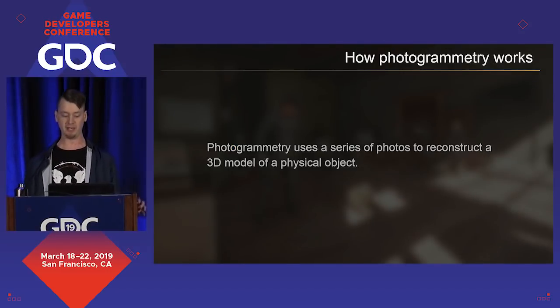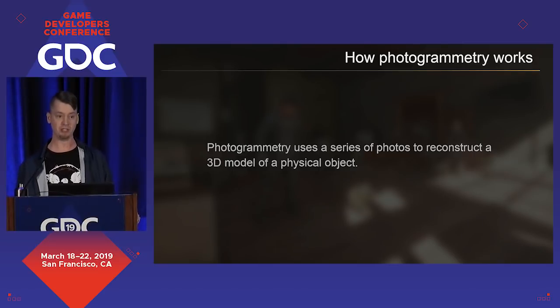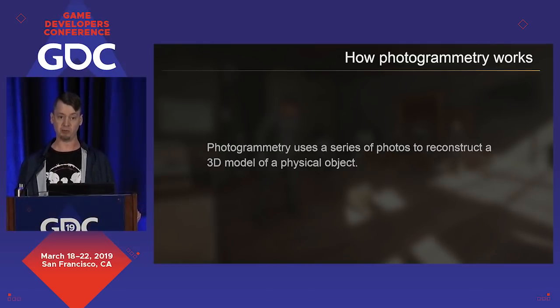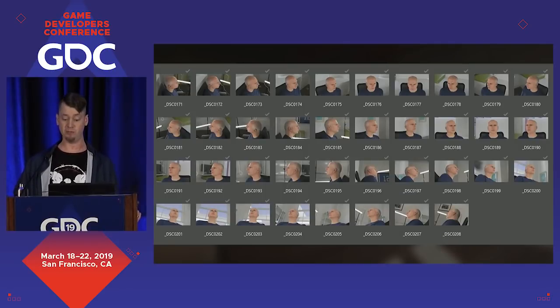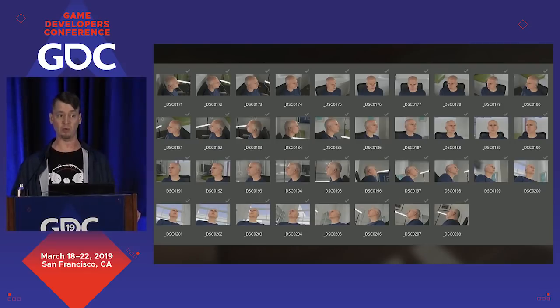What is photogrammetry? Photogrammetry uses a series of photos to reconstruct a 3D object of a physical object — basically it's 3D scanning with a camera. I begin by having my subjects sit in a chair with even lighting and I take a series of photos from different angles. For a face, I do four rows of photos at different heights, generating roughly 40 photos.